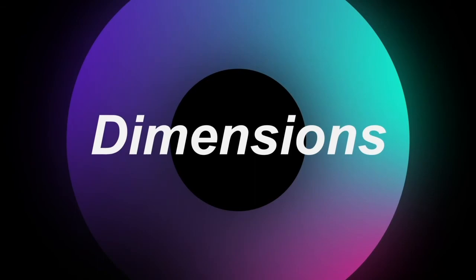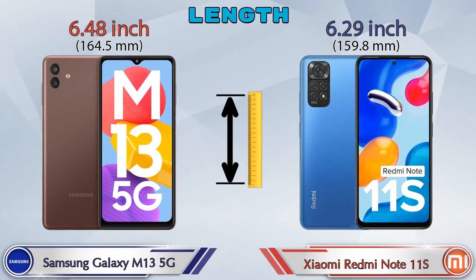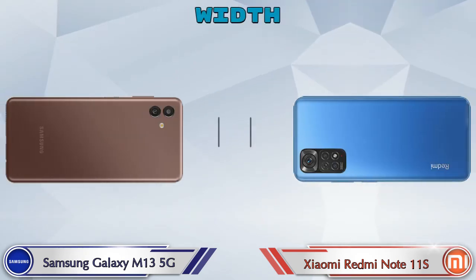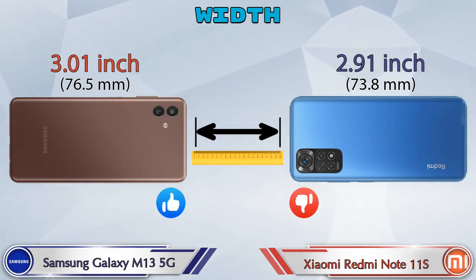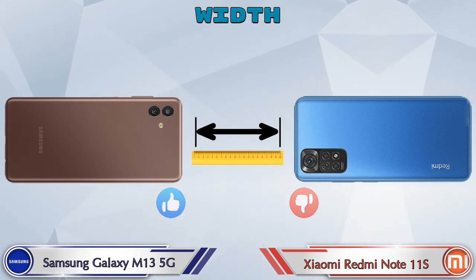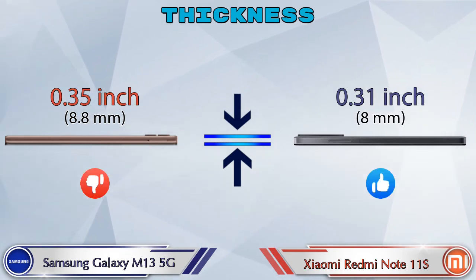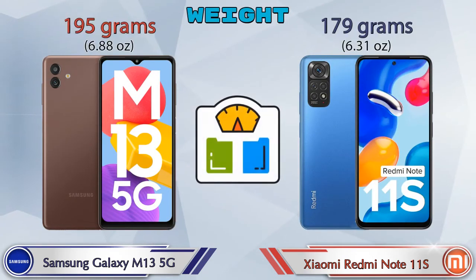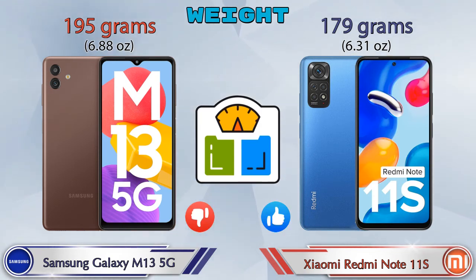Now let's check the dimensions. The length of the Galaxy M13 5G is 6.48 inches, and the Redmi Note 11S is 6.29 inches. Width is 3.01 inches for the Galaxy M13 5G and 2.91 inches for the Redmi Note 11S. Thickness is 0.35 inches on the Galaxy M13 5G and 0.31 inches on the Redmi Note 11S. Weight is 195 grams for the Galaxy M13 5G and 179 grams for the Redmi Note 11S.